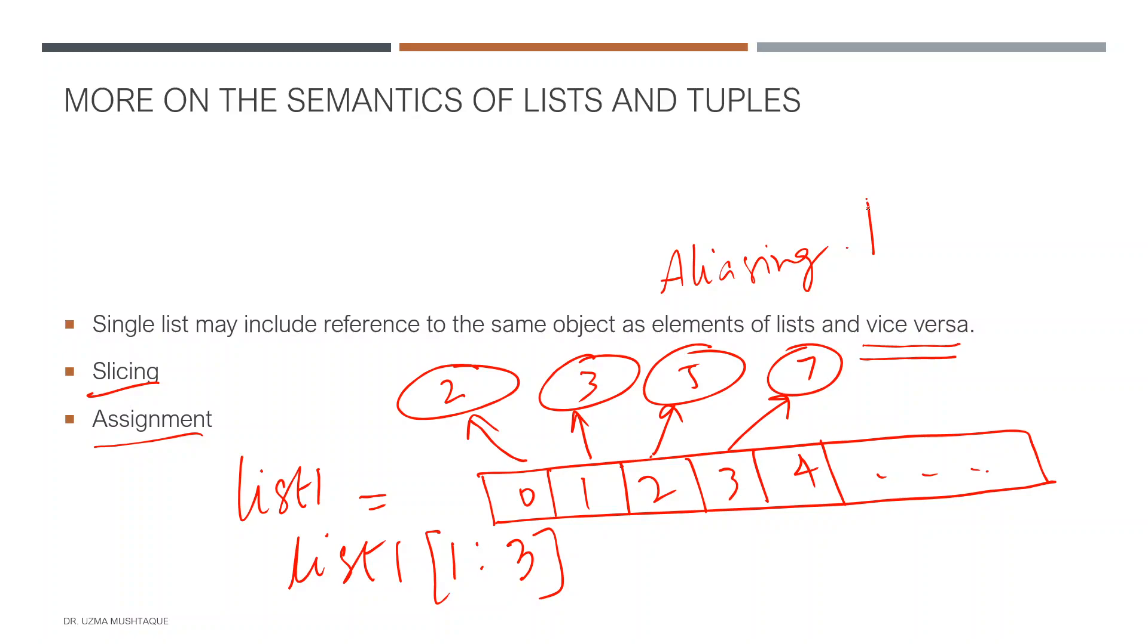What happens is I've created a new temporary list—I'm calling it temp. It begins at position one. It'll have its own indices: zero, one, and two. But these will point to these elements here. One to three does not include three, so it'll have just two elements. It's referencing the same elements, but this is a new temp list.